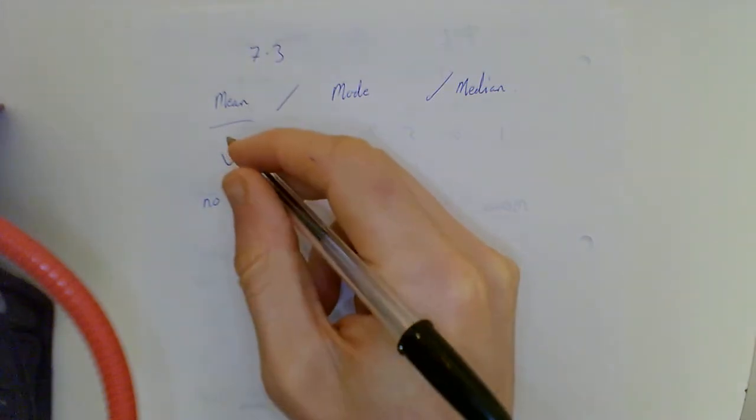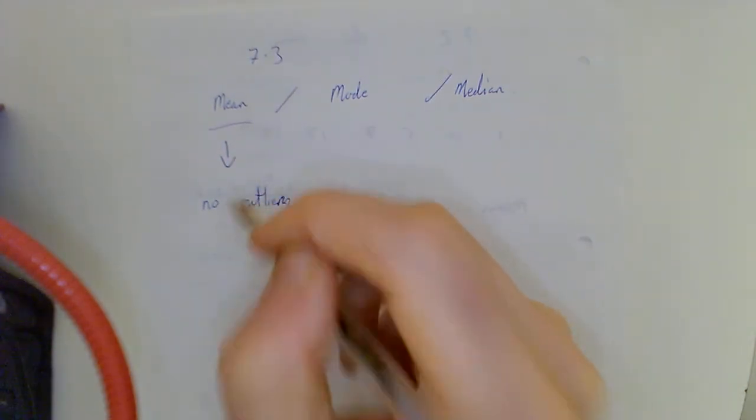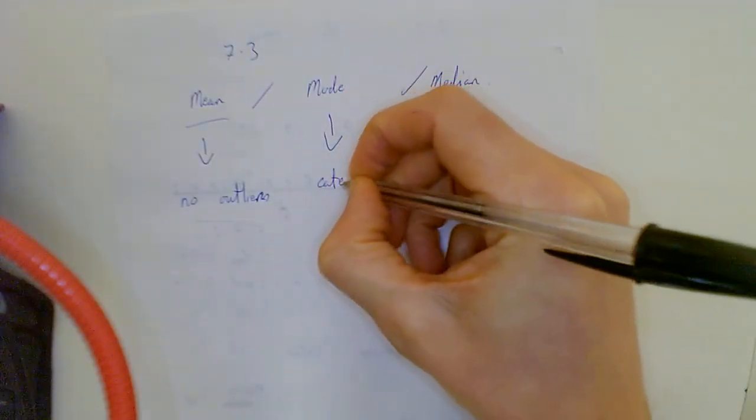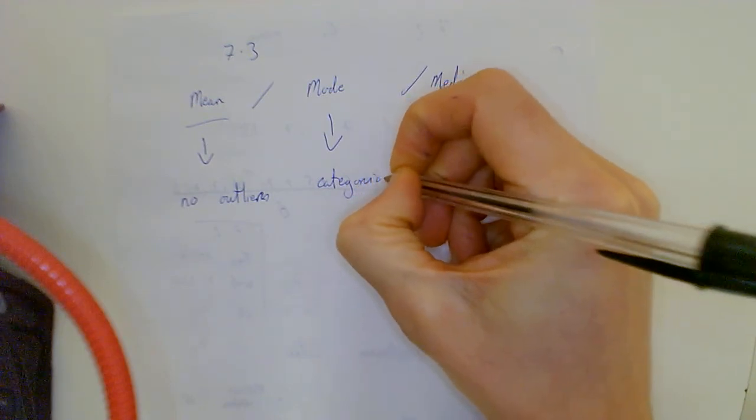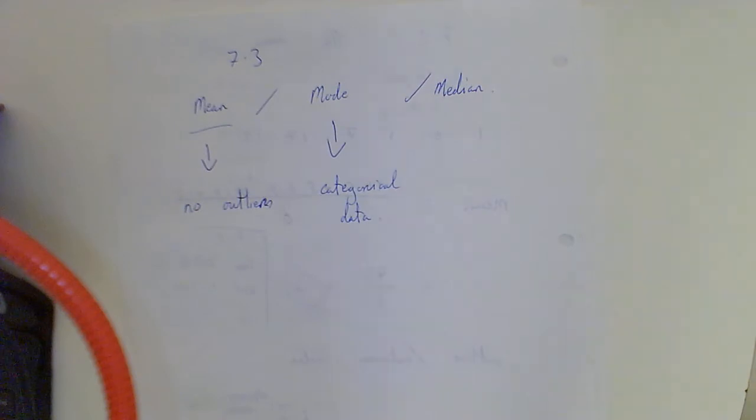Mode is for categorical data. Now what do I mean by categorical? Anything that is not numbers. We need a measure of average for that. What is the average car in the color of car in the car park? Gray. If there's ten grays, three blacks, four reds, then gray is the average. Really simple.